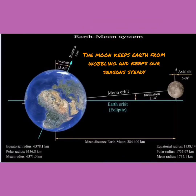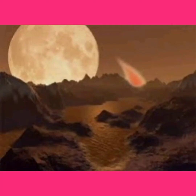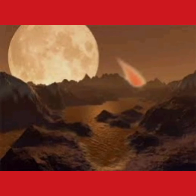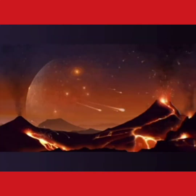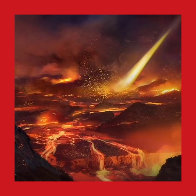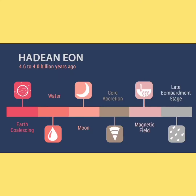At the end of the Hadean Eon, Earth was still in the late heavy bombardment stage, and asteroids and comets pelted Earth. Thus, in the Hadean Eon, we obtained the heat source, the magnetic field, and the Moon. There are no fossil records, as temperature was too high to sustain life.